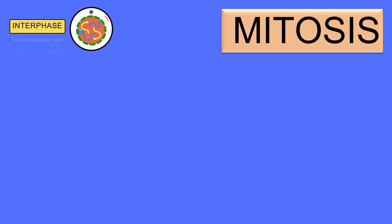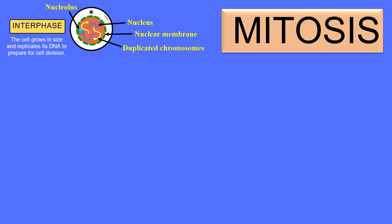Before mitosis begins, during interphase the cell prepares all components such as DNA and other proteins. A typical cell at this stage has a nucleus containing the genetic material — the chromosomes — surrounded by a nuclear membrane, with a nucleolus also present within the nucleus. The DNA gets duplicated during the S phase of interphase, and the cell also has centrioles which will form the spindle fibers.